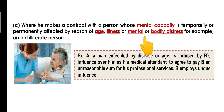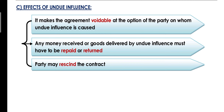Point number three: agar aapne contract kisi aise person ke saath enter kiya jis ki mental capacity temporarily ya permanently affected ho, jo bahut zyada old ya bimar ho, ya sharirik taur pe unfit ho, ya ek unpaid yaane illiterate person hai jo weaker position pe hai. Jaise maan lo ek patient bahut zyada bimar hai, aur ek doctor uska ilaaj karne ka absurd pay maangta hai, aur yeh bhi pata hai ki uska ilaaj sirf woh doctor hi kar payega. Aise case mein us patient ke paas koi aur chara nahi — usse doctor ki munh maangi keemat deni hogi — kyunki patient ek weaker position pe hai aur doctor ne apne position ka faida uthakar unfair fee maangi. Toh ye ho gaya undue influence.